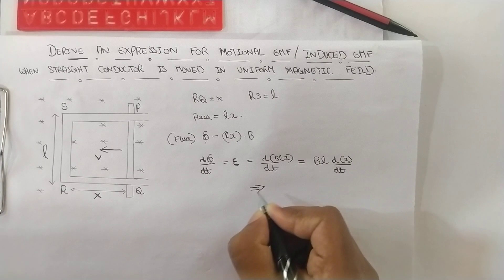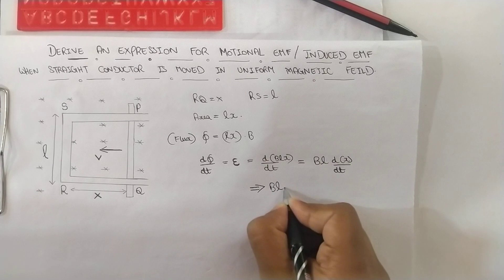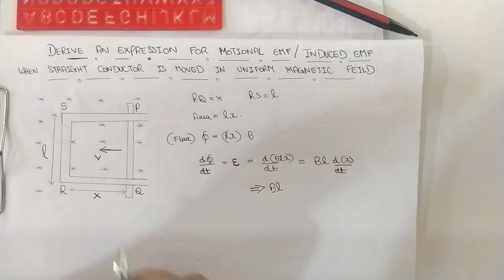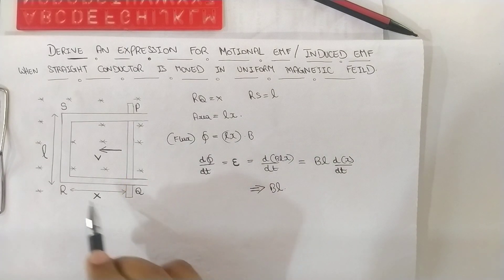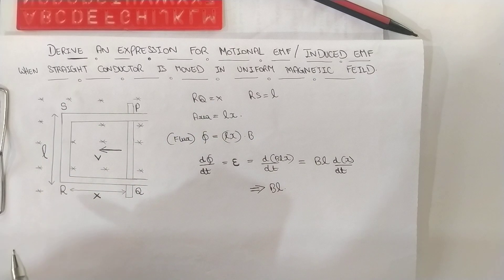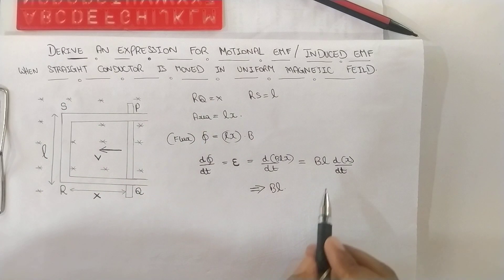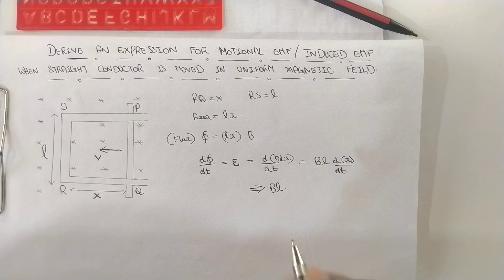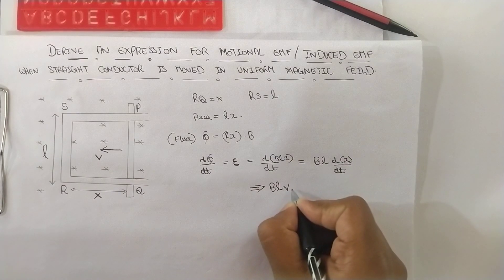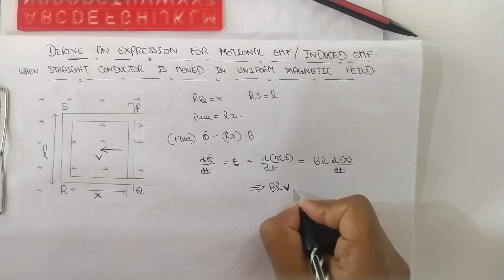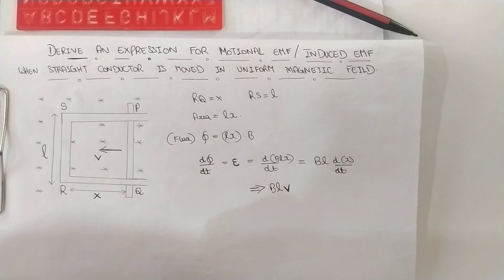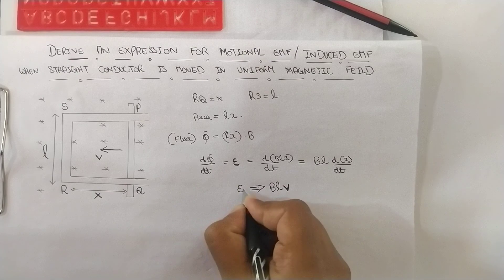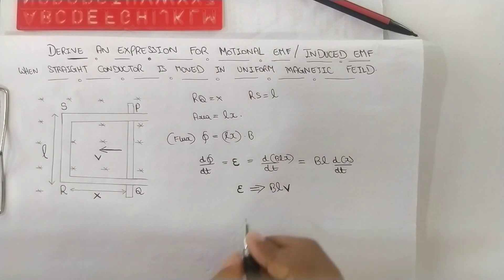Differentiate dx by dt. B L into, what is dx by dt? X is the distance between the arm and the end of the rectangular conductor. So distance with respect to time differentiation will give us velocity V. Here the velocity is V which is the velocity of the arm PQ. This is the motional EMF we are supposed to derive.